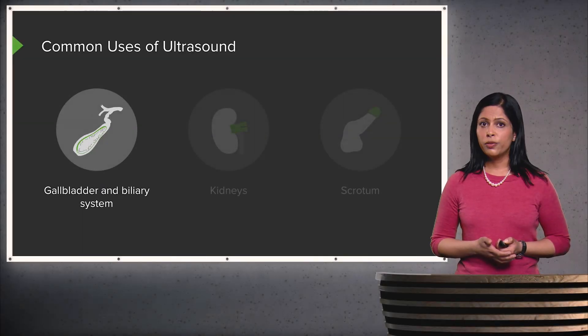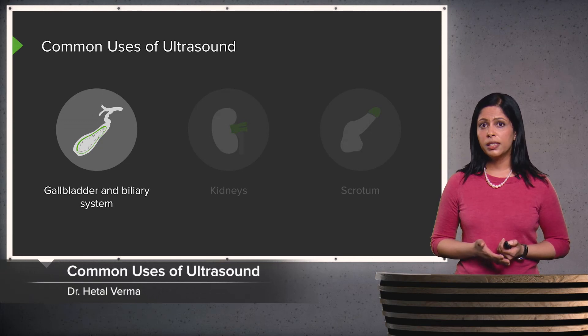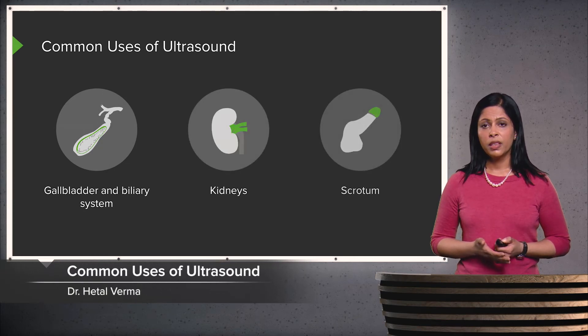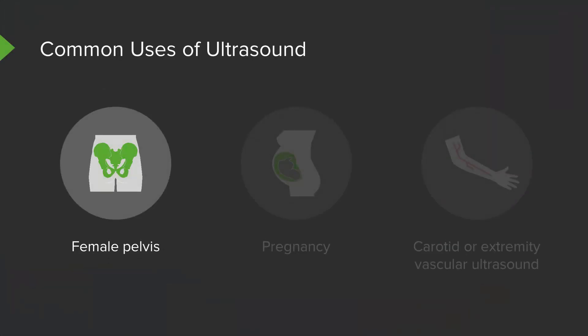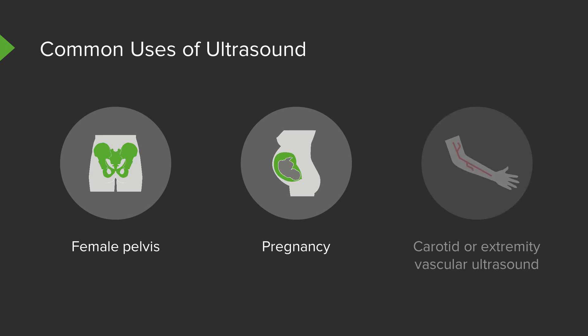There are many different uses of ultrasound. It's often used to evaluate the gallbladder and the biliary system, and the kidneys. The scrotum is very well evaluated with ultrasound. The female pelvis is a very common area of use. In pregnancy, ultrasound is one of the only imaging tools used because it has no radiation and no side effects. It's also used for carotid or extremity vascular ultrasound and provides a very good look at superficial vessels.